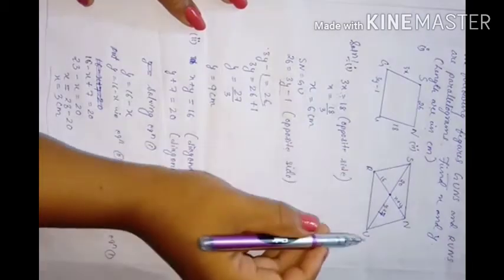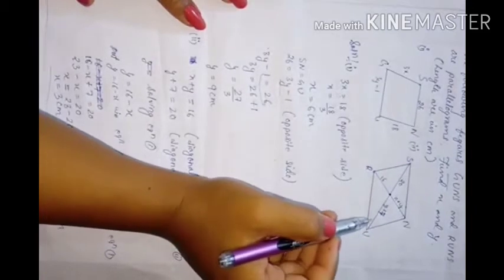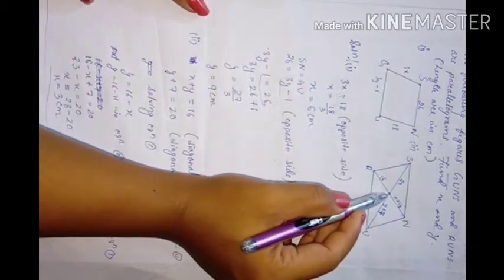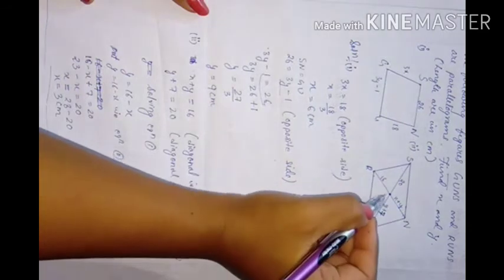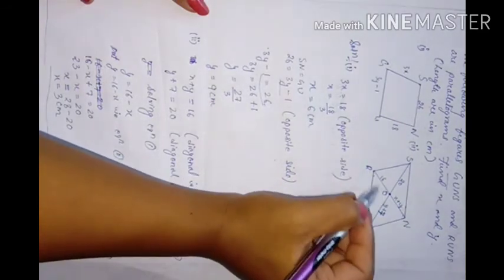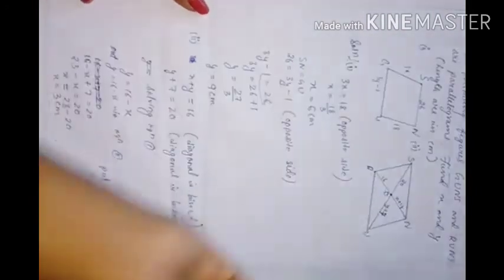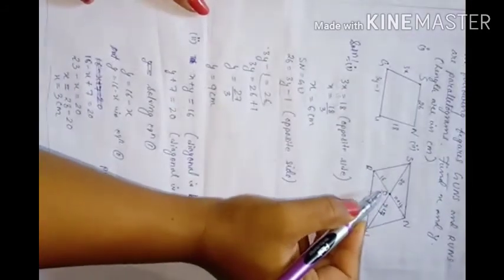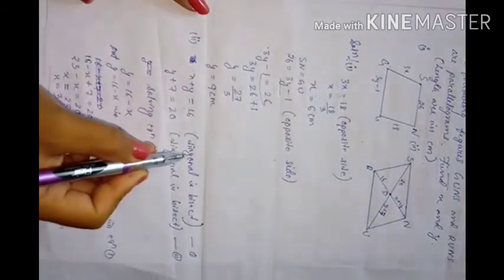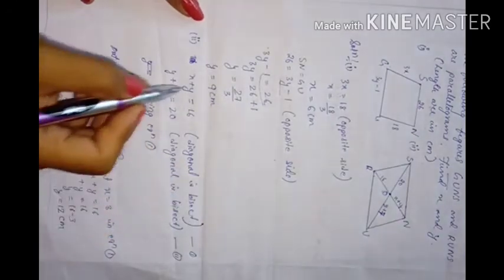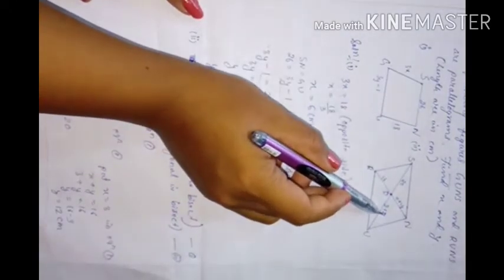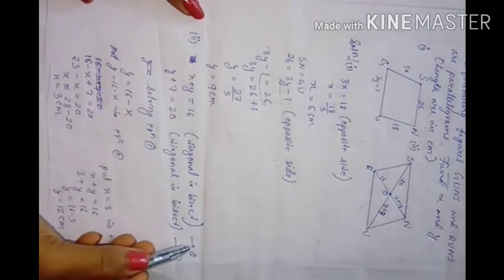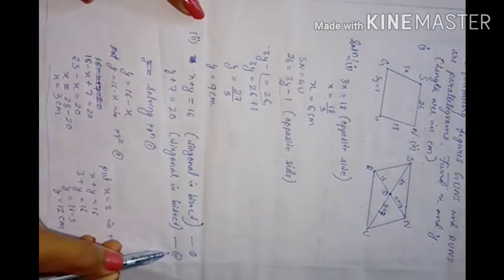For RUNS: The diagonals bisect each other. Let O be the intersection. ON equals OR, so x plus y equals 16 (equation 1). Also OU equals OS, so y plus 7 equals 20 (equation 2).